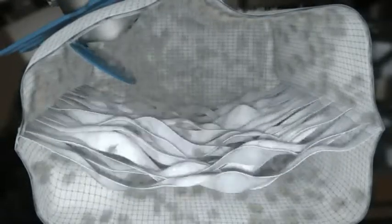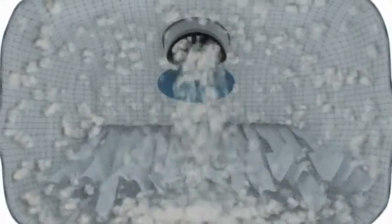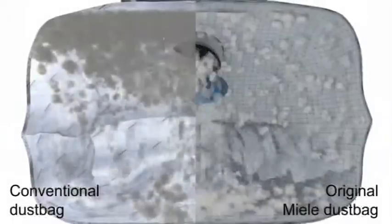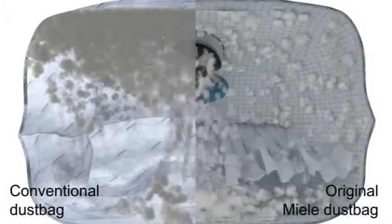Miele's AirClean Filter Bags have specially designed air guides which distribute dust evenly throughout the bag and provide a greater surface on which more dust can collect. This results in greater dust retention than in a conventional random spun dust bag.